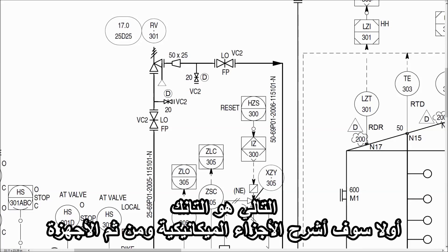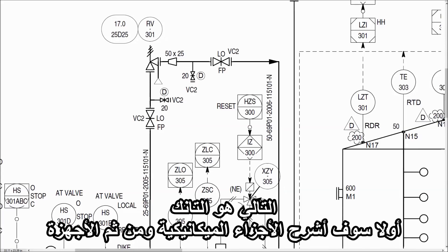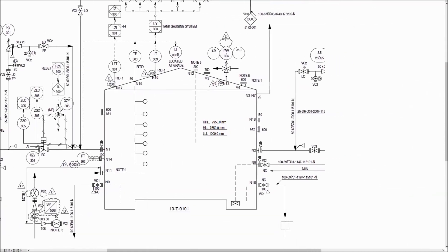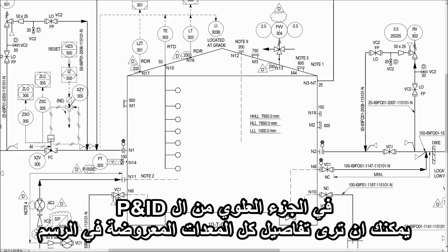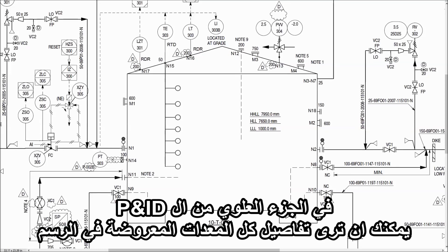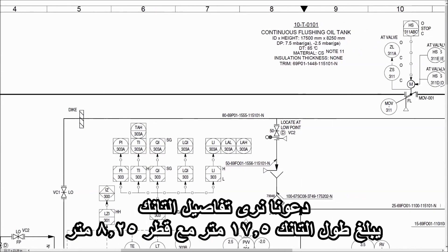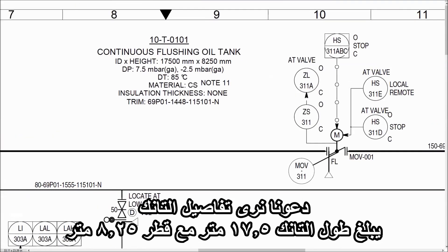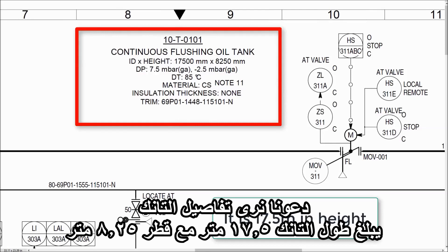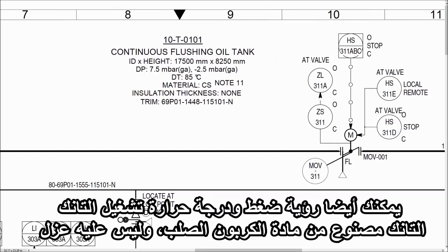Next is the tank. First, I will explain the mechanical parts and instrumentation. As you can see, this is the fixed roof tank. On the top of the P&ID, you can see the detail of each piece of equipment shown in the drawing. The tank is 7.5m in height and 8.25m in diameter. You can also see the operating pressure and temperature of the tank. The material of construction is carbon steel and there is no insulation.